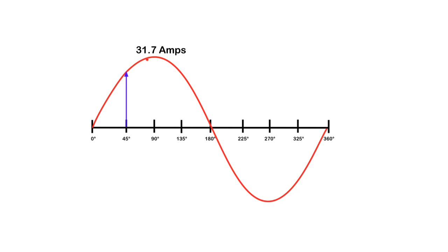So let's say that I have a peak value of current of 31.7 amps, and I wanted to figure out what my effective value of current is, my RMS value, or what my AC meter would read.